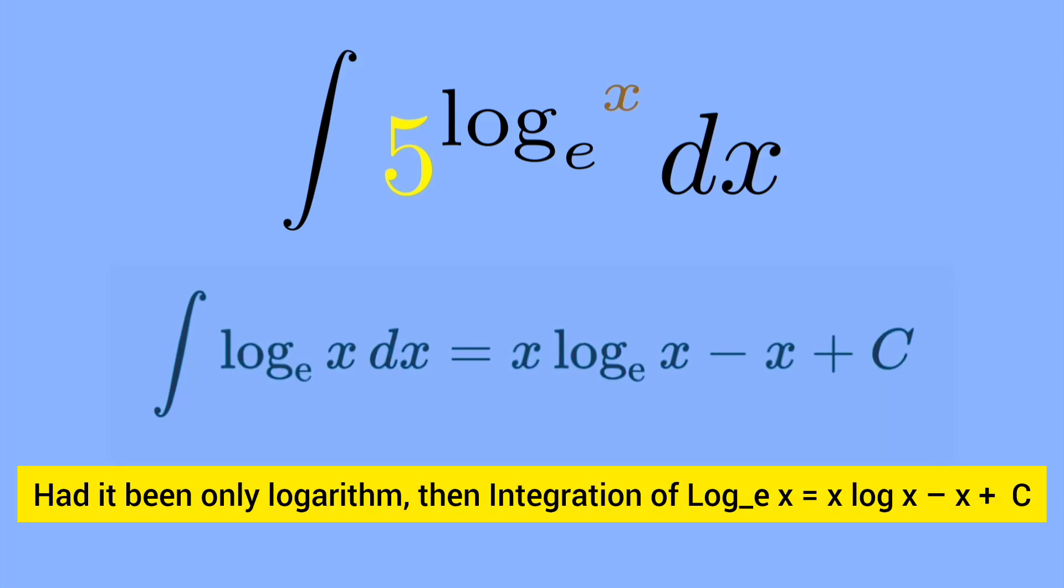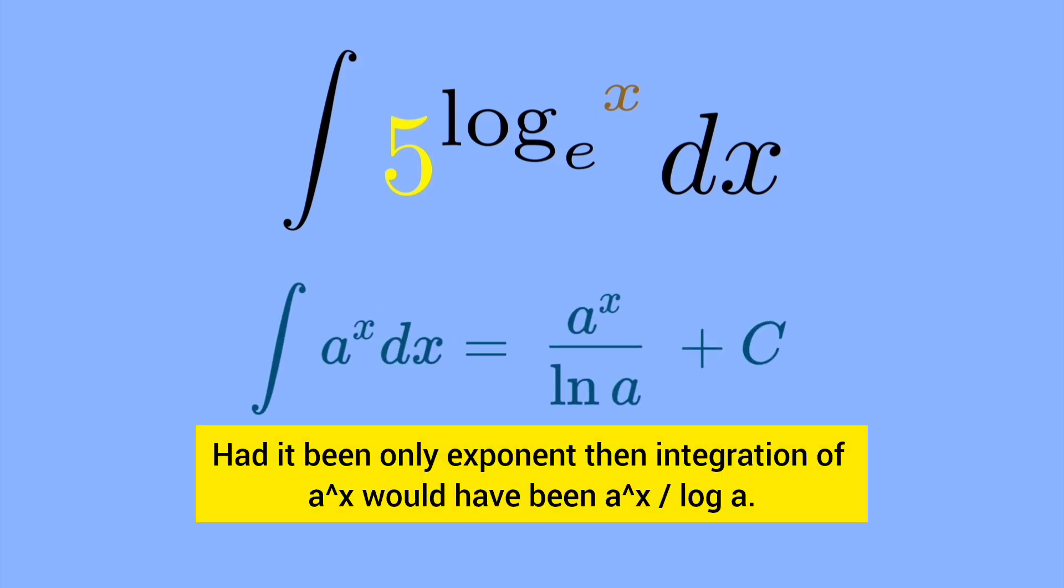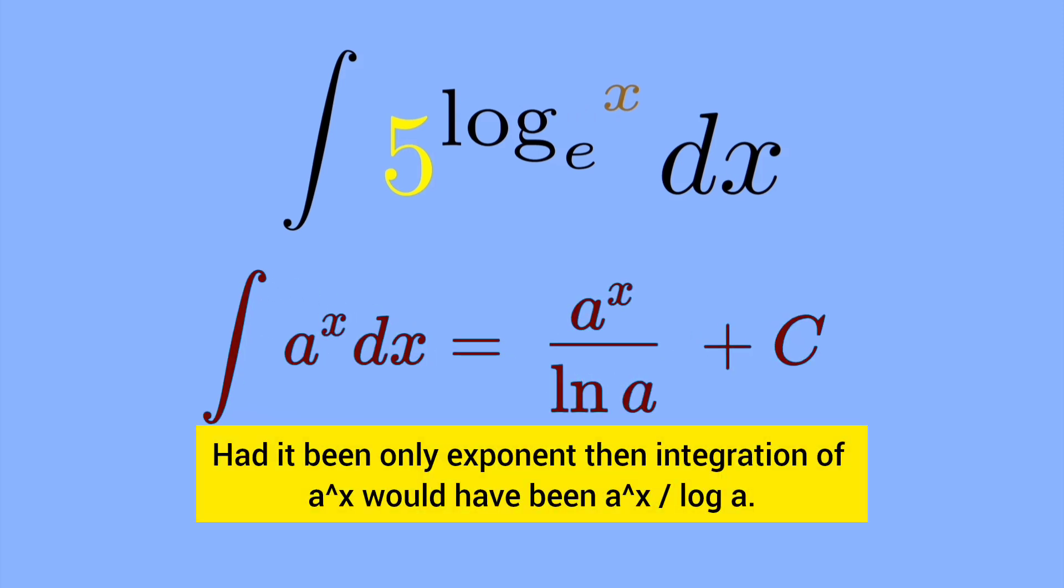Had it been only logarithm, then integration of log of x to the base e would have been x log x minus x. Had it been only exponent, then integration of a to the power x would have been a to the power x upon log.